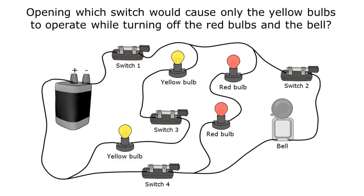This last example question is a little bit trickier. It asks: opening which switch would cause only the yellow bulbs to operate while turning off the red bulbs and the bell? Since we want to leave the yellow bulbs on, I'm going to trace the path electricity needs to take through the yellow bulbs from one side of the battery to the other. That tells me I would need to leave switches one and three closed so the yellow bulbs operate — so neither of those can be the answer.